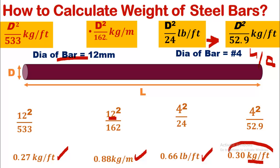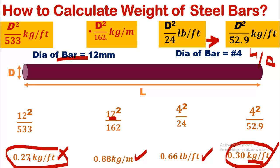Both kg-per-feet results — one derived from the 12 mm bar and one from the Number 4 bar — are approximately close to each other when rounded, showing consistency across the formulas. That's how you use these four different formulas for calculating the weight of steel as desired. If you are new to my channel, please subscribe and press the bell icon for video updates.